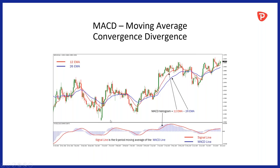We can see on the example that the 12 EMA is the red line and the 26 EMA is the blue line. When the two lines are moving apart — when the red one is above the blue one — the histogram is above zero, and the further apart the two indicators are, the bigger the histogram. As they begin closing in and eventually cross, the histogram slowly gets smaller. Without even knowing where the moving averages are on the chart, we can tell how they're interacting just by looking at the MACD histogram.